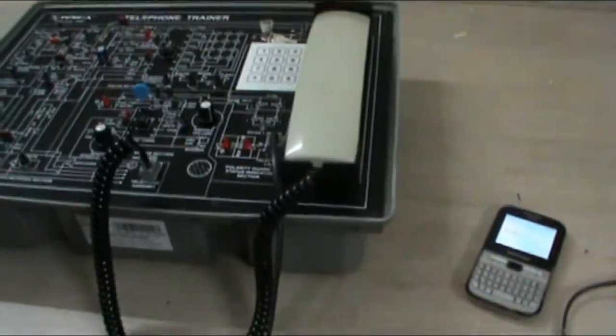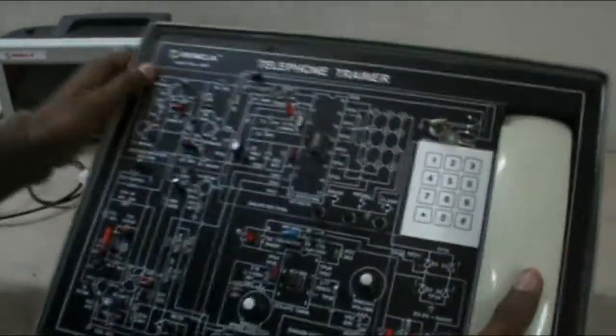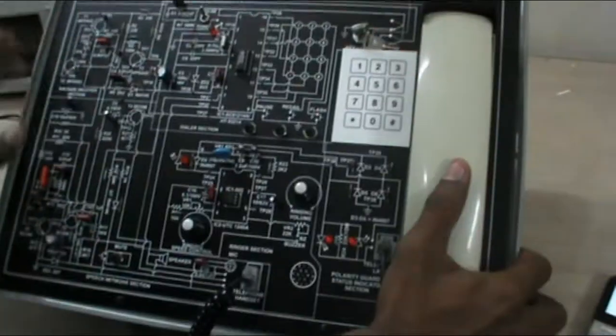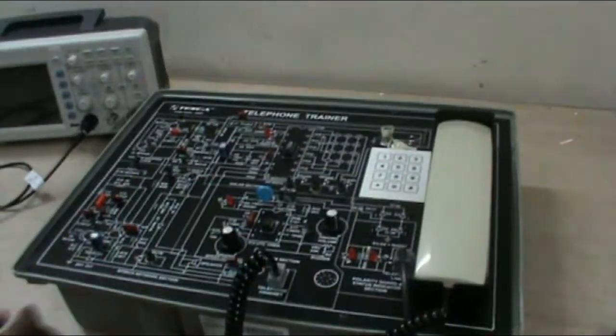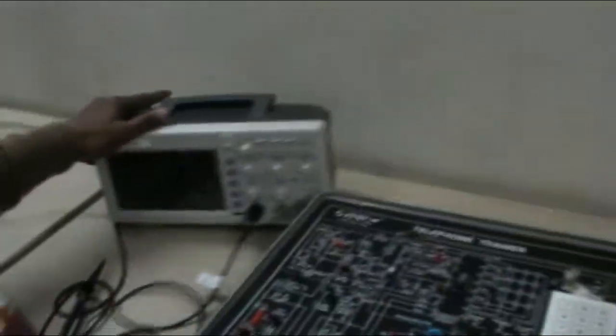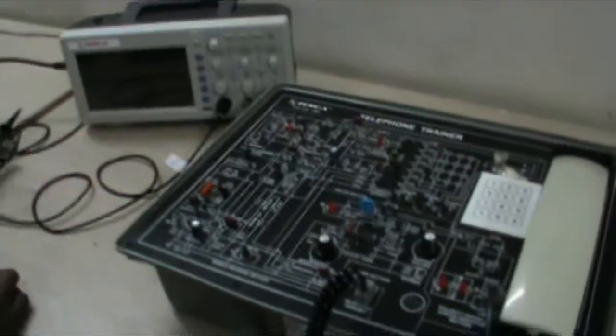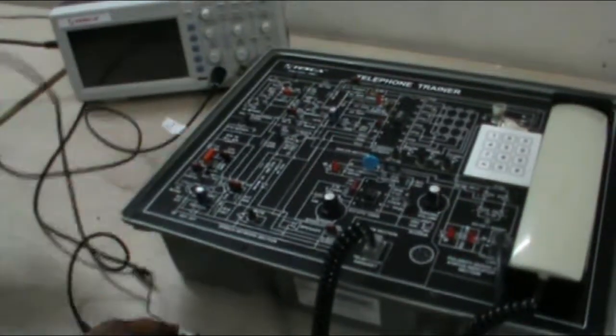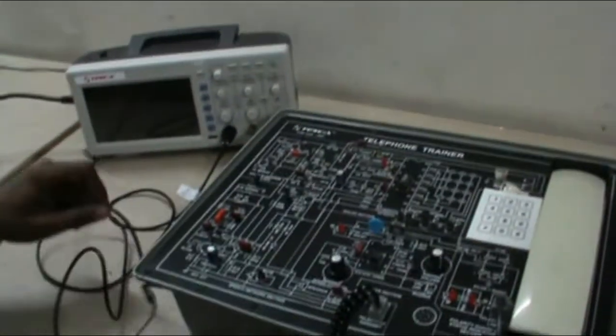You can observe the different waveforms at different test points. There are many test points given on the panel. This is the CRO. With the help of this DSO you can observe the different waveforms and different signals at different test points.